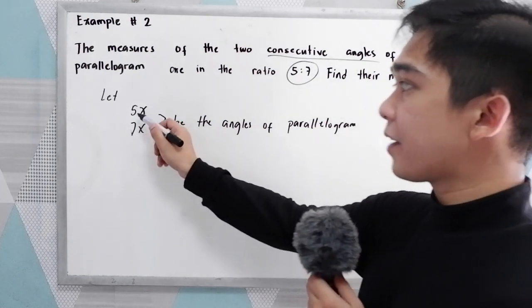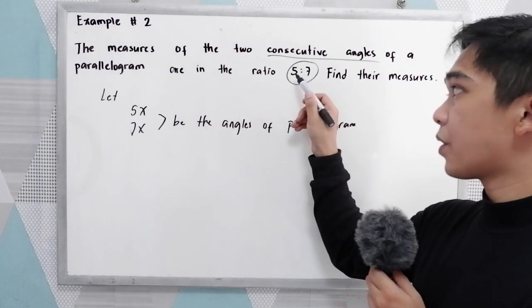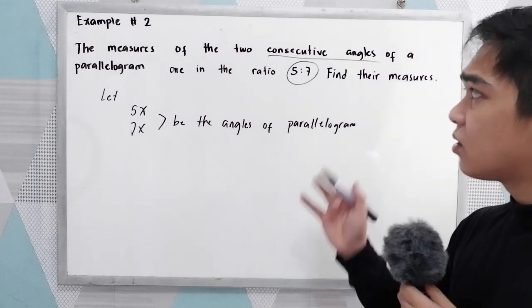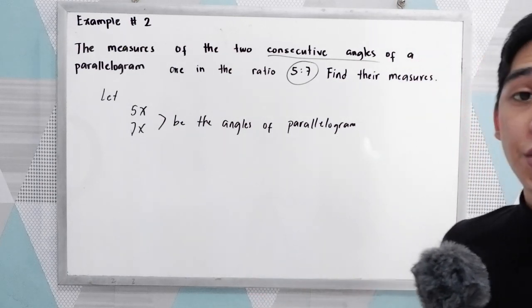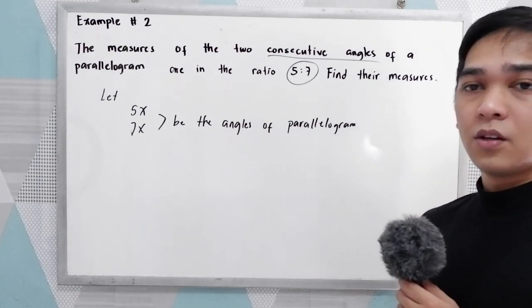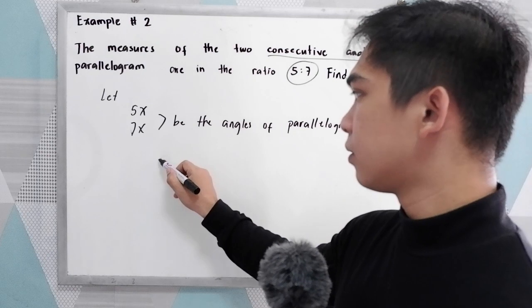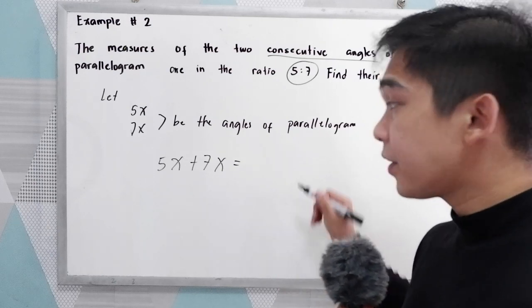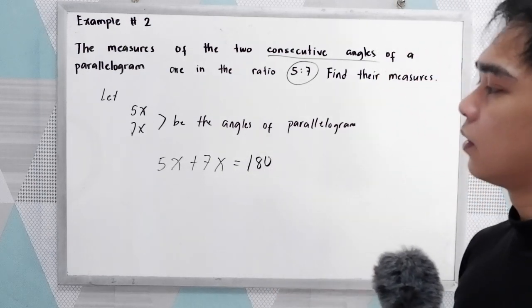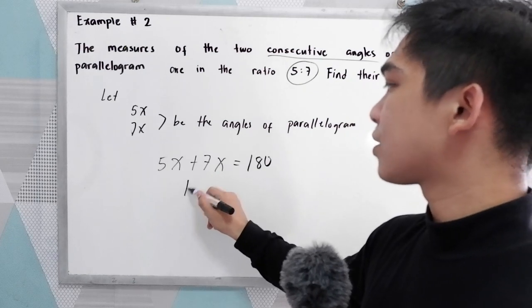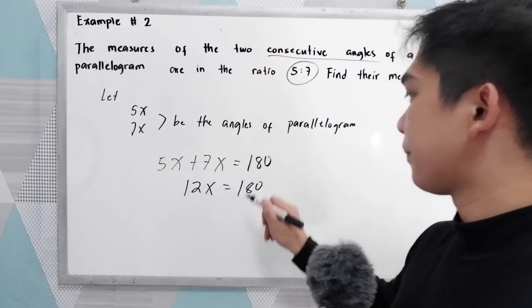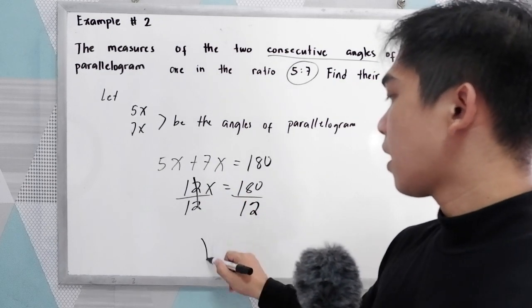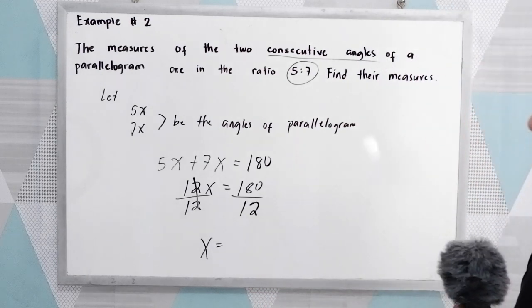The 5 and 7 come from our given ratio. We know that consecutive angles of a parallelogram are supplementary. So if we add the two terms: 5x plus 7x equals 12x, which is equal to 180. To get x, divide by 12.